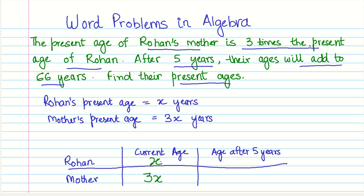Now, what is going to be Rohan's age after five years? It will be simply x plus 5. We just add 5 to it. And what about his mother's age after five years? It becomes 3x plus 5. That is, the current age is 3x, right? So we take that straight away, 3x plus 5 years.